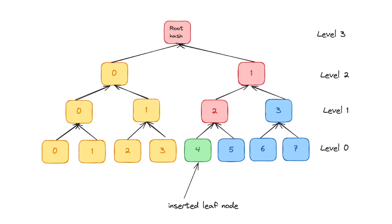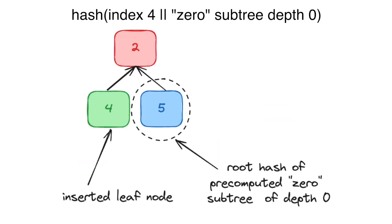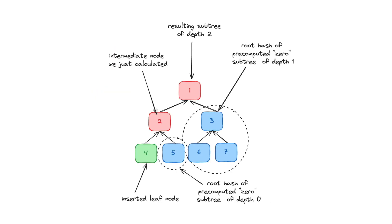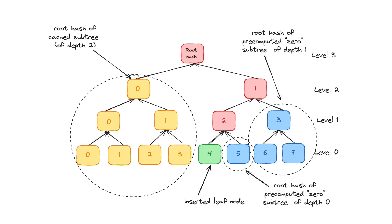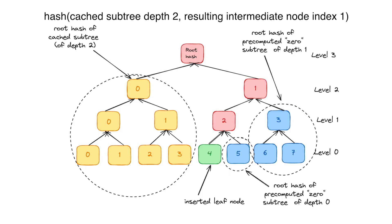Let's add an even index node at index four to our depth-three tree. Since the index is even, we store the inserted leaf as a cached subtree of depth zero. We then hash it (on the left) with the zero subtree of depth zero at index five (on the right), producing intermediate node index two at level one. Since that intermediate node has an even index, it goes on the left and is hashed with a zero subtree of depth one on the right. The result is intermediate node index one at level two. Since that has an odd index, it goes on the right and is hashed with a cached subtree of depth two on the left. We then store the result as the updated Merkle root.